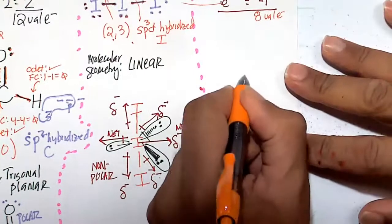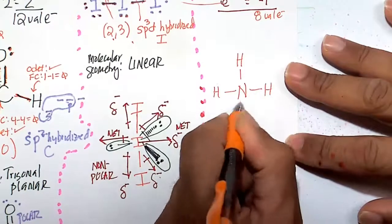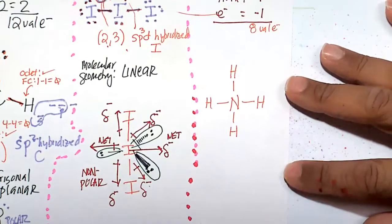So nitrogen is our central atom, and it's going to be 1, 2, 3, and 4. So that is the structure of NH4.